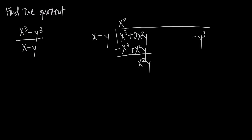Now we need to figure out what we have to multiply by x to get x squared y — that's just xy. So we say plus xy, and now we multiply xy through by our entire divisor. xy times x is x squared y, and xy times negative y gives us negative xy squared.